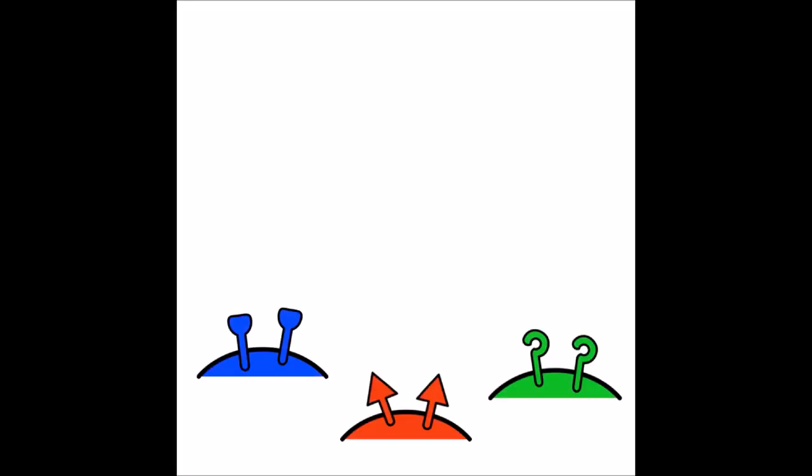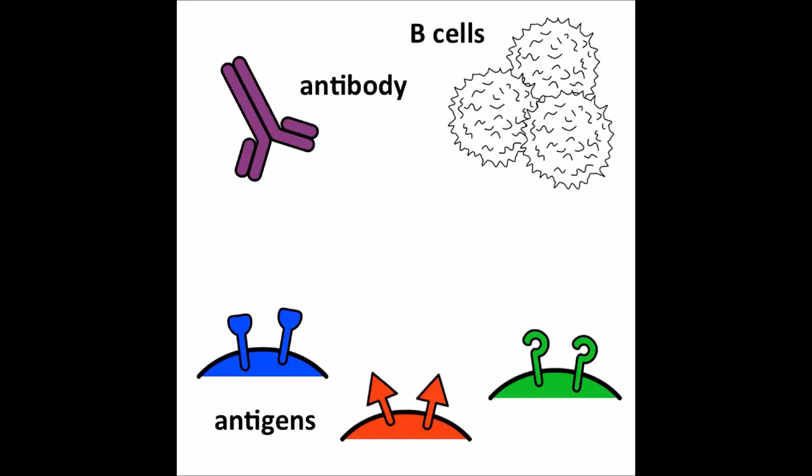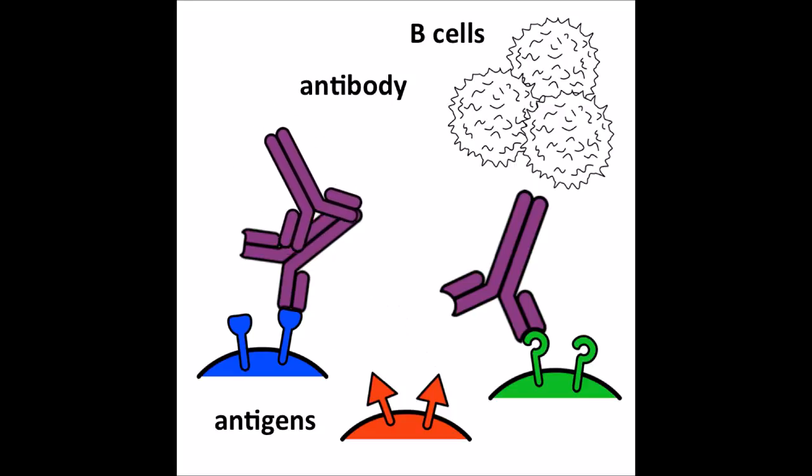Scientists also call these surface markers antigens. Now, the immune system can detect these cell surface antigens with small proteins called antibodies. Antibodies are produced by special white blood cells called B cells, and they can bind to the surface antigens of foreign cells, but not the body's own cells.